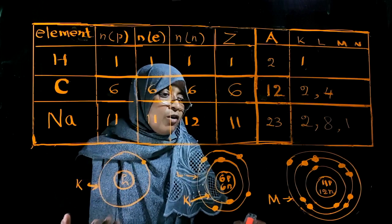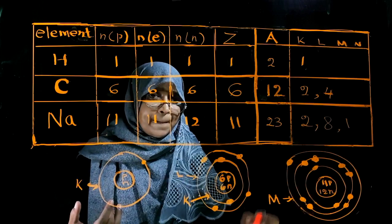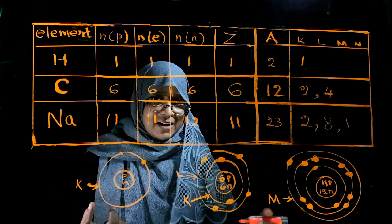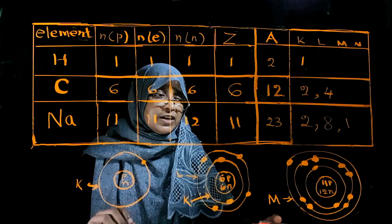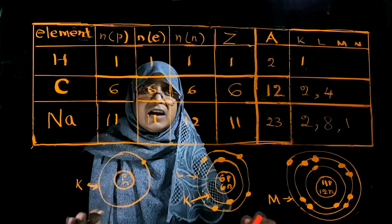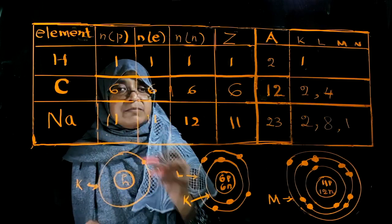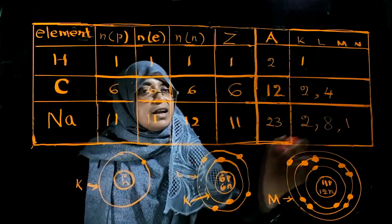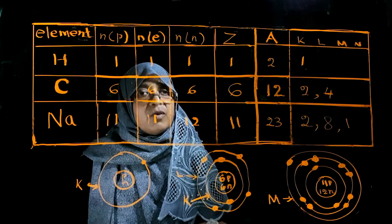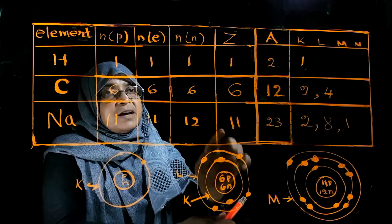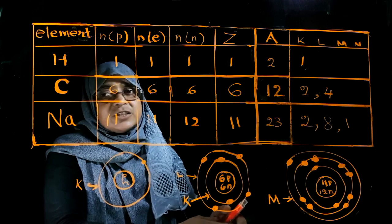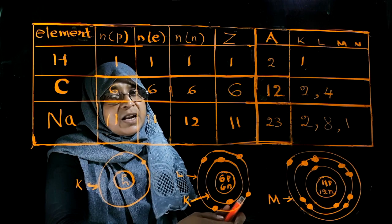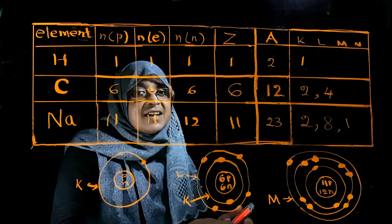If there are more than 8 electrons in the M level, the remainder goes to the N level. But sodium has only 11 electrons, so this is the way electrons fill in the sodium atom. Like this, we can write the electronic configuration of any atom. Now we know the atomic number, mass number, and electronic configuration, so we can understand how the periodic table is formed. We will see the periodic table in the next video.